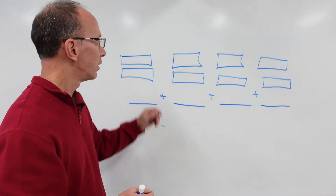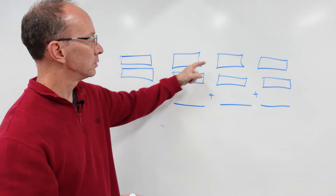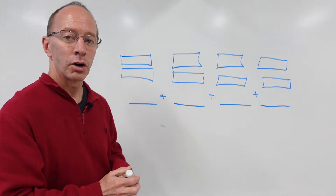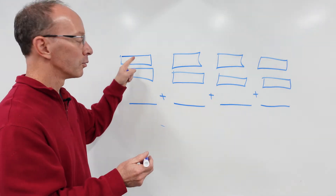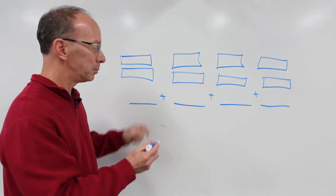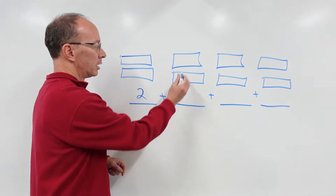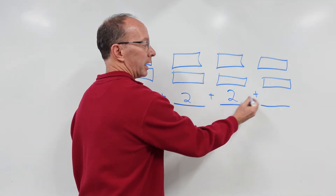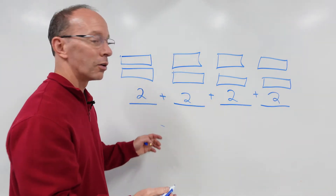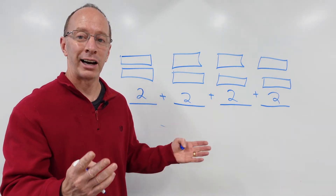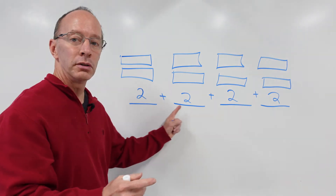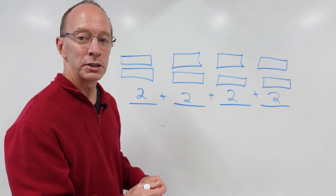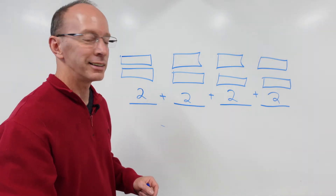Here is another example. We have four groups of two — one two, one two, one two, one two. To solve this, we write down the number in each group: two, two, two, and two. We can count by twos: two, four, six, eight. Four groups of two equals eight.